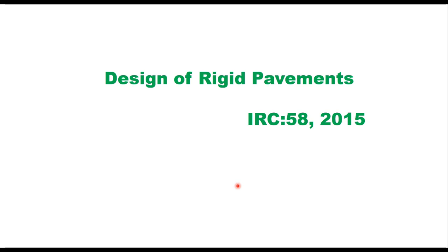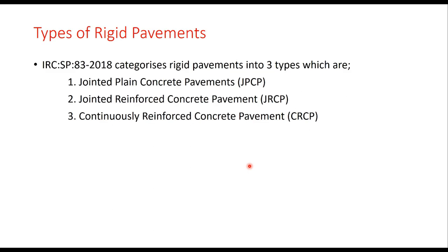In this lecture we will discuss design of rigid pavements as given in IRC 58 2015. A rigid pavement or concrete pavement is made of cement concrete or reinforced concrete. IRC SP83 categorizes rigid pavements into three types: jointed plain cement concrete, jointed reinforced concrete pavement, or continuously reinforced concrete pavement. This lecture will discuss only jointed plain concrete pavements.